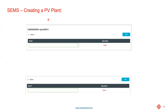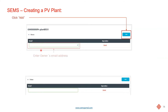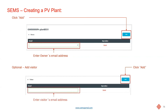Once you've clicked on the create plant button, you can then enter the email address of the owner — that's not your email address, but the email address of the end user. You can also enter emails from visitors, such as family members or friends of the end user who would like to see the performance of the system.